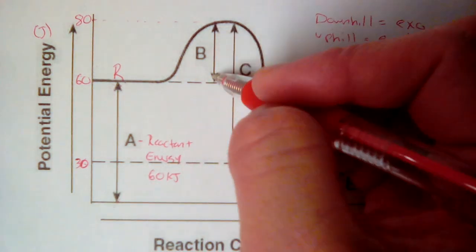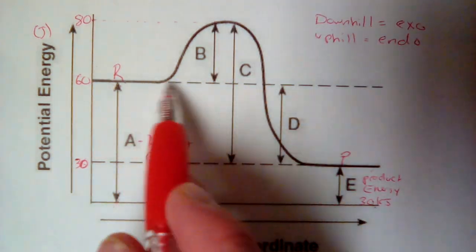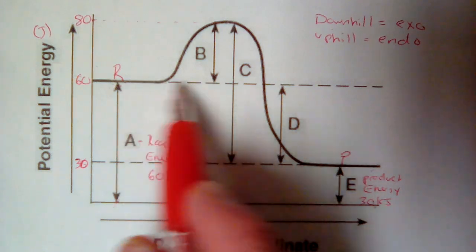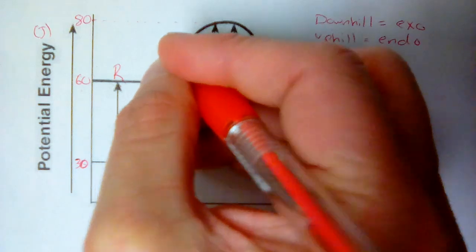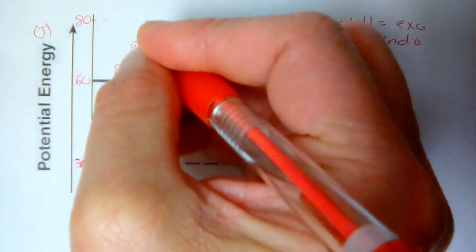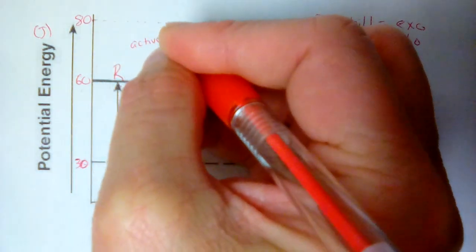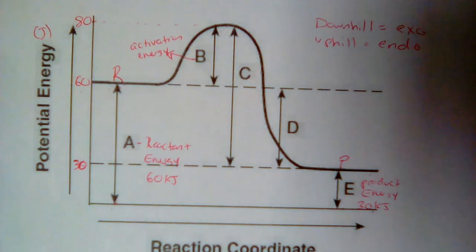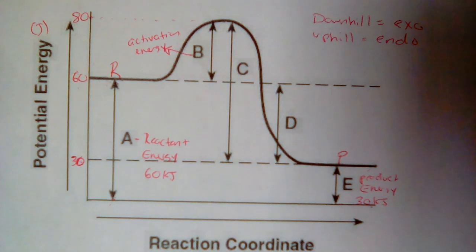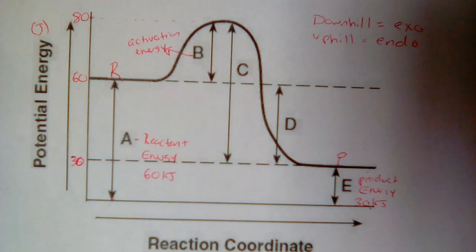You need to know what B is. B measures from the reactant energy, from our 60 kilojoules to the highest point on our curve. B is what we call activation energy. According to collision theory, when the particles collide, they have to have a certain amount of energy for the reaction to progress. That amount of energy is the activation energy. It's the energy needed to activate the reaction.